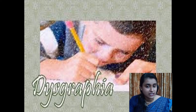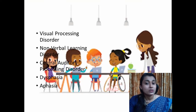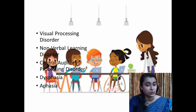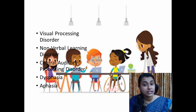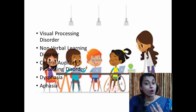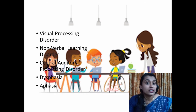Dysgraphia is a writing disability where the student has difficulty forming letters. Visual processing disorder is a sensory disability related to processing images, and non-verbal learning disorder is a visual-spatial disability related to body control. Dysphasia is a disability where the student has difficulty with reading comprehension, and aphasia is a disability where the student has difficulty understanding spoken language.